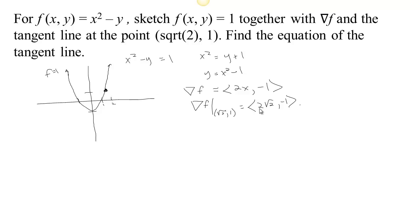Now we can look at what the gradient is telling us. We should go forward 2√2 — that's about 2.8 — and then down 1. So we're going forward almost 3 and down 1. The gradient gives us something that is perpendicular to the tangent of the level set.